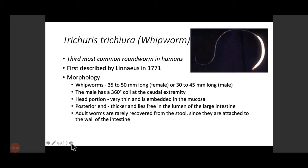Trichuris trichiura, known as the whipworm, has a typical whip-like morphology visible in microscopy. It is the third most common roundworm in humans, first described in 1771, and is 35 to 50 millimeters long depending on the gender of the worm. The male has a 360-degree coil at the caudal extremity. The thinner anterior portion gets embedded into the intestinal mucosa, while the thicker posterior end lies freely in the lumen, absorbing nutrition and surviving in the human intestine.